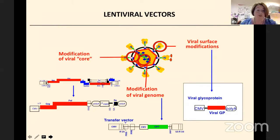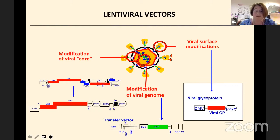Lentiviral vectors, as Axel told you last week, are made from transfection of three different constructs borrowed from HIV virus. One encodes for the structural and enzymatic proteins GAG-POL, and the other encodes for the gene transfer vector or the viral genome, into which we can introduce a reporter or our gene of interest. And finally, the emphasis of this talk, we also transfect a plasmid encoding for a viral glycoprotein that will modify the surface of the lentiviral vector.